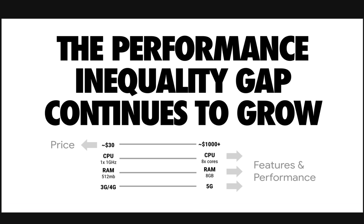This performance inequality gap is likely to continue growing. We're likely to see flagship devices continue to race ahead while cost continues to be critical to the next billions of users trying to get on the web. There's an expanding range of performance — the slower devices are not really getting that much faster; focus is really on driving down the price, while those fast devices are getting faster and faster. It's important to make sure that you've got this in mind when you're developing for the web.